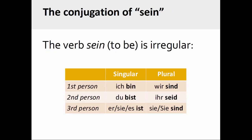Finally, there are some verbs that are used very frequently and are irregular. These conjugation patterns simply need to be memorized. The conjugation pattern for the first verb, sein, or 'to be,' is: ich bin, du bist, er/sie/es ist, wir sind, ihr seid, sie sind.